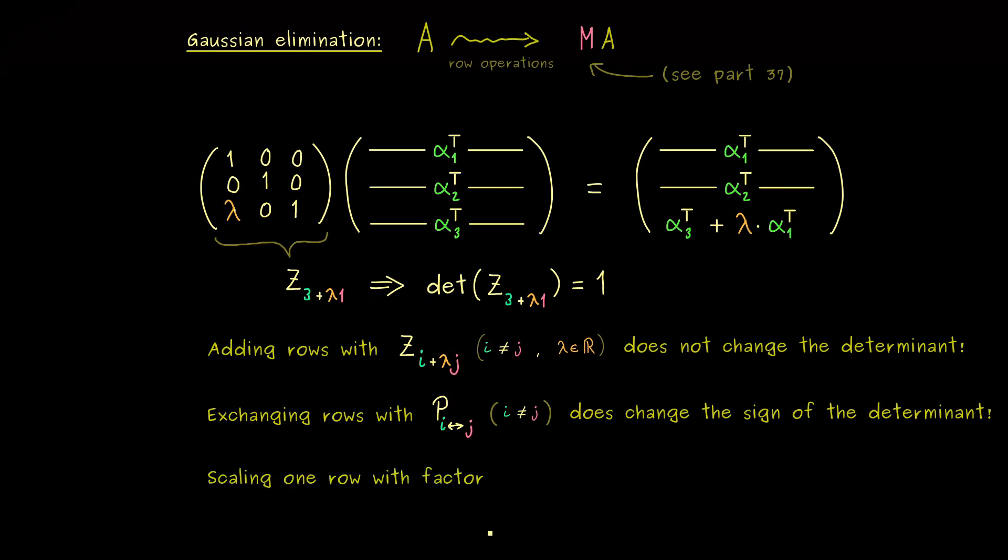And then finally, you also know, sometimes in the Gaussian elimination, we have to scale rows as well. So let's say here, we only scale one row by a factor dj. And now this is not a surprise, by our multiplication rule from above, we know that we will also scale the determinant by the same factor.